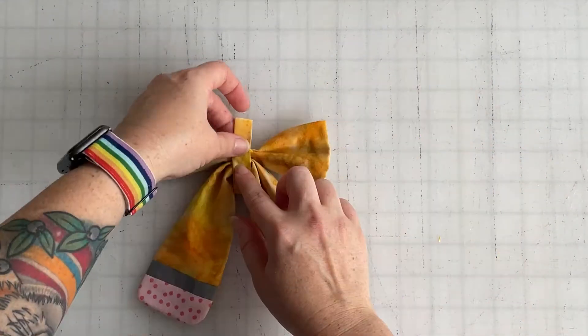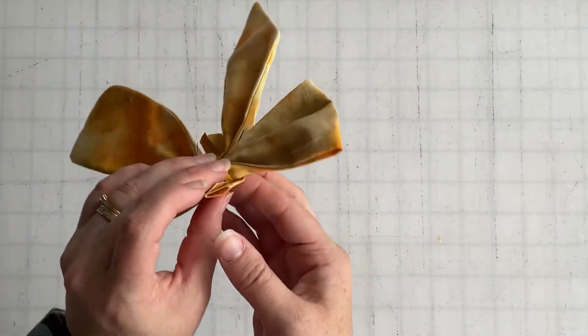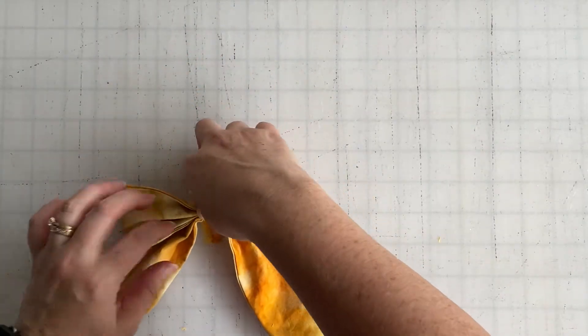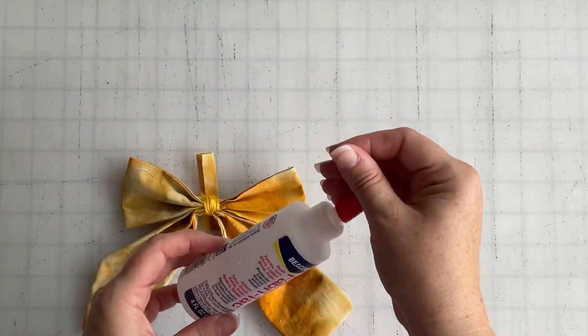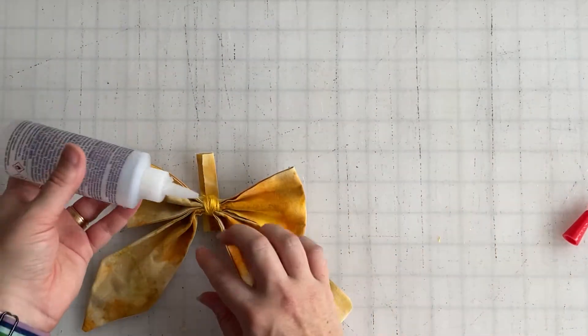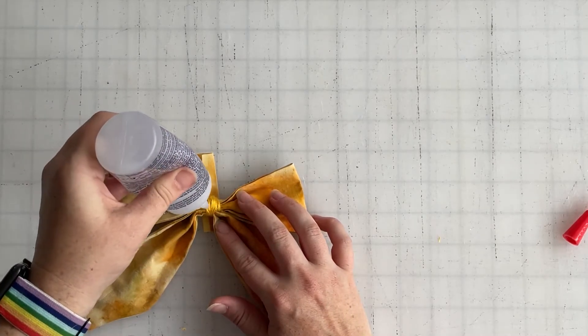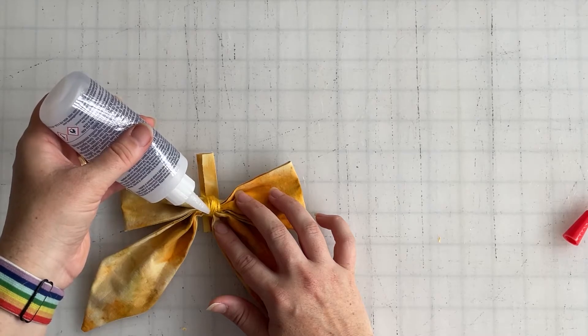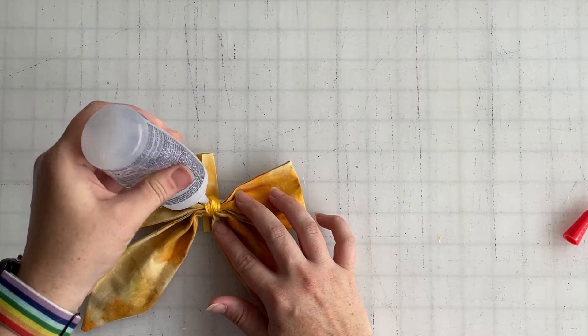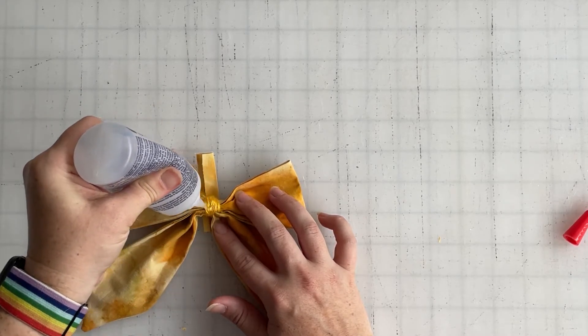We're going to be wrapping it around the middle center here. Now you can use hot glue if you want. I love fabric tack, it's like my favorite glue. It's a little stinky but it really is pretty intense and does its job. If you are adding a clip or a bobby pin or really anything, this is where you'd be adding it.